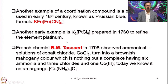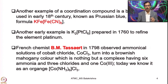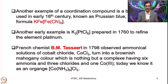French chemist BM Tassault in 1798 observed that an ammoniacal solution of cobalt chloride turned into a brownish mahogany colour, which is nothing but a complex having 6 ammonia and 3 chloride. Today we know it as hexamine cobalt(3) chloride — cobalt in the +3 state. This is the first cobalt complex, prepared by BM Tassault in 1798.